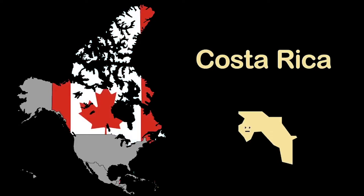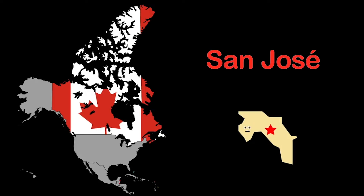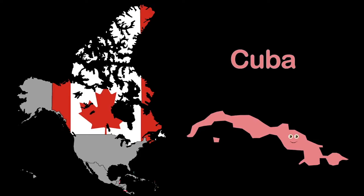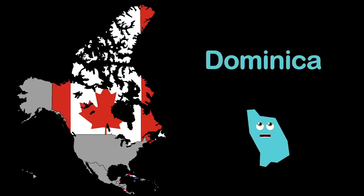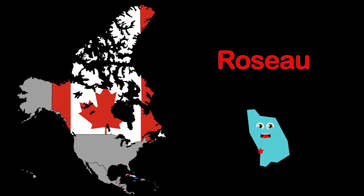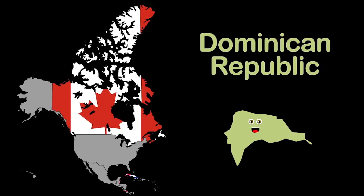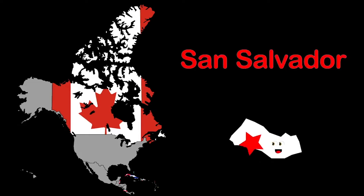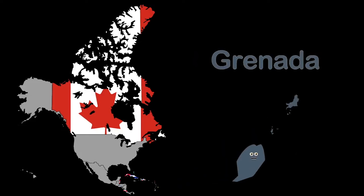I'm Canada, North America's largest country — Ottawa is my capital. I'm Costa Rica, between Panama and Nicaragua — San José is my capital. I am Cuba, off the coast of Florida — my capital is Havana. I'm Dominica, a mountainous Caribbean island — Roseau is my capital. I'm Dominican Republic, I share an island with Haiti — Santo Domingo is my capital by the Caribbean Sea. I am El Salvador, touching the Pacific Ocean — San Salvador is my capital.